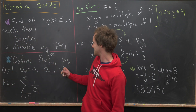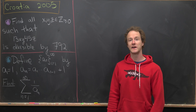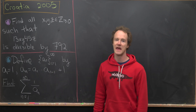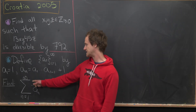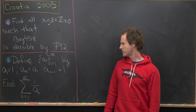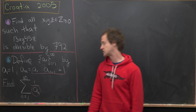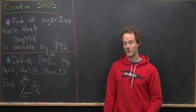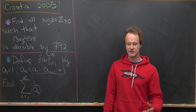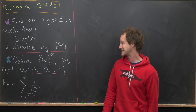Now let's move on to the second problem. We define a recursive sequence: a₁ = 1, and aₙ = (a₁ · a₂ · … · aₙ₋₁) + 1. Our goal is to find the infinite sum of 1/aₙ from n = 1 to infinity. This looks like summing a rational function, similar to integrating a rational function with partial fractions, which motivates using those methods here.